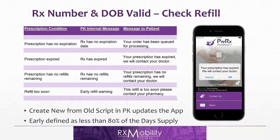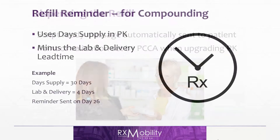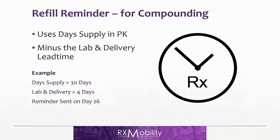Here's a list of messages the patient could get in this scenario. A couple of things to note: first, if you use the command 'create new from old script' in Pk software, then the app will automatically update with the new script number and retain all patient details for that script. Second, 'early' is defined as being less than 80% of the day supply in Pk — so for a 30-day supply, that's 24 days or less. When dispensing the refill, a message is automatically sent by Pk software to the patient via the app telling them the item is ready. PCCA sets this point of dispense or point of validation when they upgrade the Pk software.